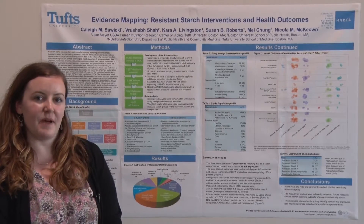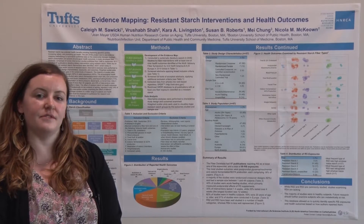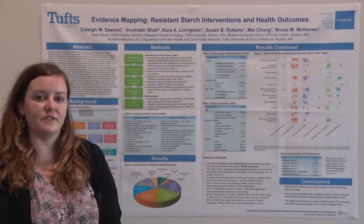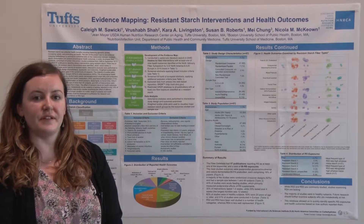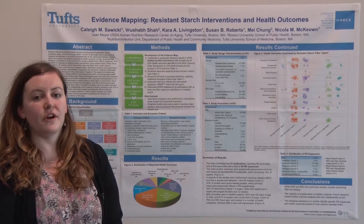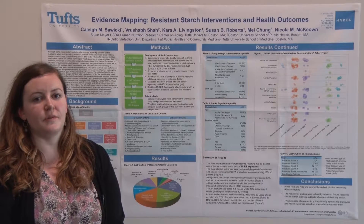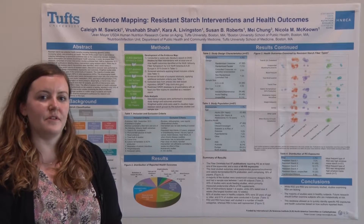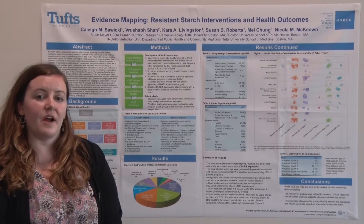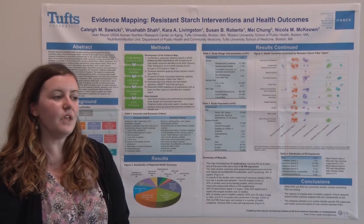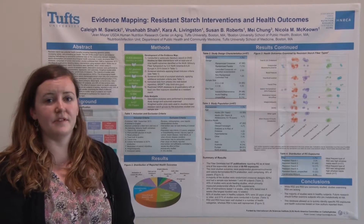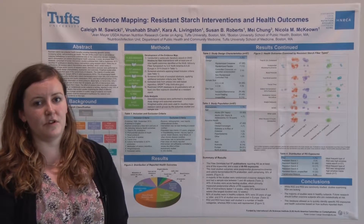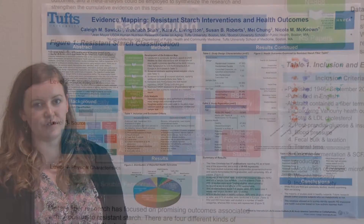This evidence map was created using a larger database developed by our group at Tufts University with the support of Ilse, which currently details over 900 publications on dietary fiber interventions and a variety of health outcomes. From this database we identified 57 publications which specifically look at resistant starch.